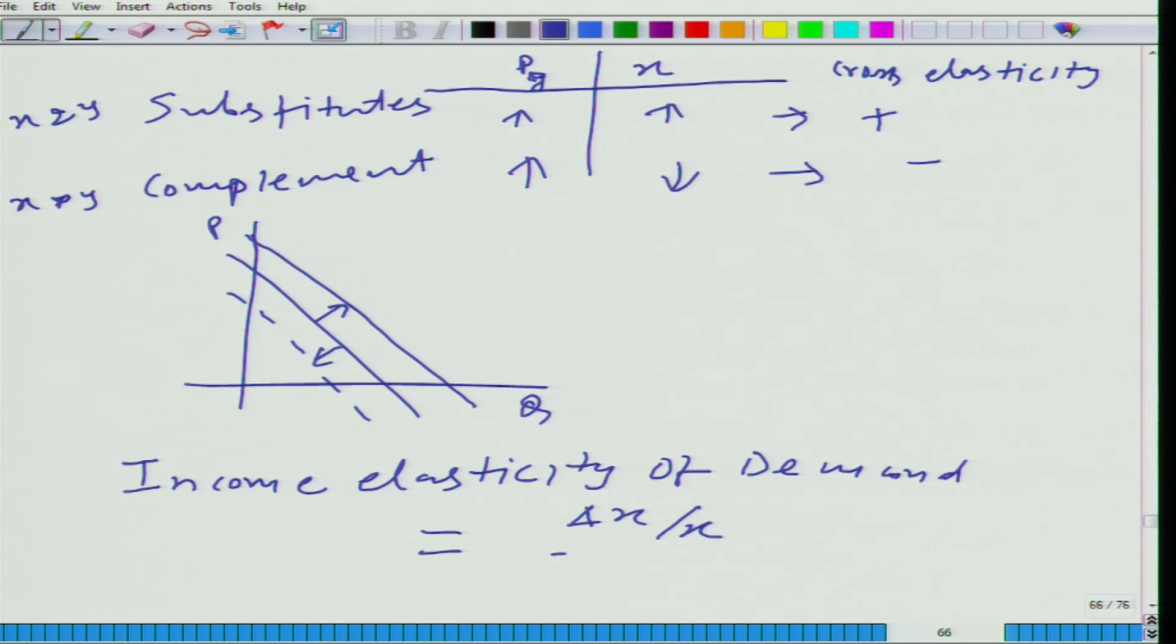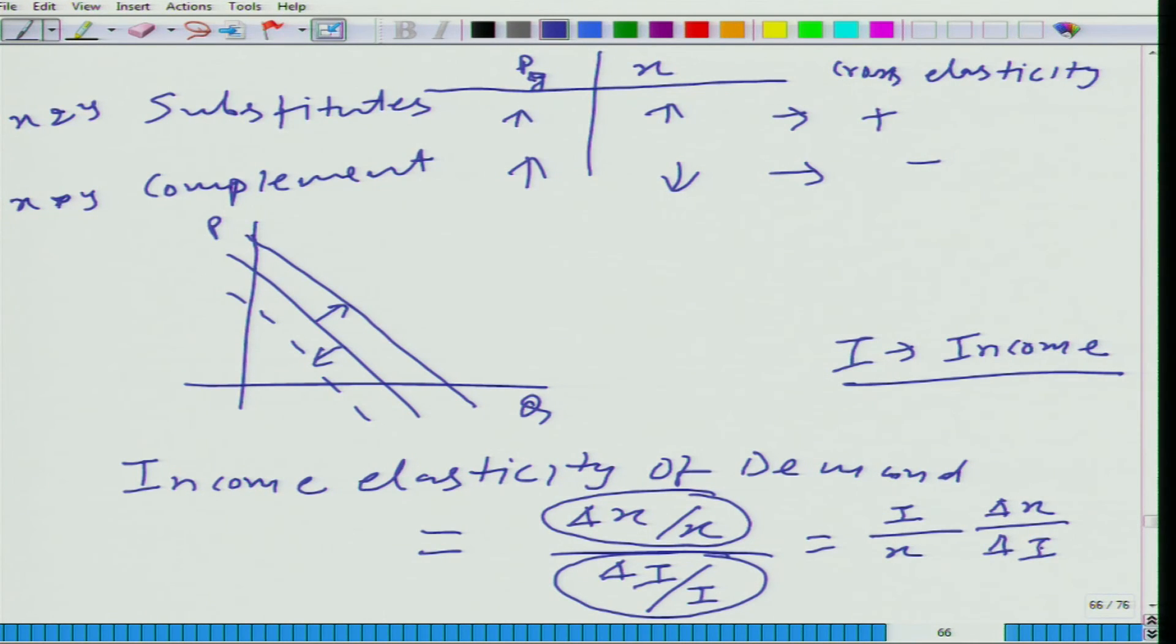Delta x by x divided by delta i by i, where delta x denotes the change in quantity demanded and delta x by x is proportional change in quantity demanded. And what is delta i by i? i denotes the income and delta i by i is proportional change in the income. Or we can also write it by i divided by i divided by x delta x by delta i.